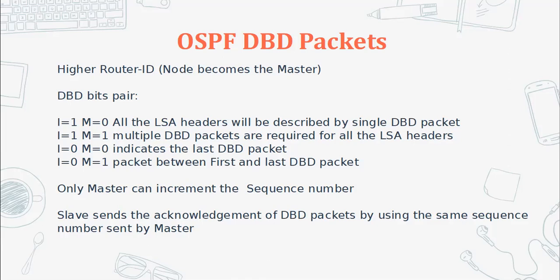In OSPF, the acknowledgement of DBD packets by the slave is done by echoing the same sequence number. For example, if the master sends a DBD packet with sequence number 100 to the slave, the slave will not increment that sequence number. It sends the acknowledgement with the same sequence number 100, and the master knows the slave received that information. Only the master can increment the sequence number.